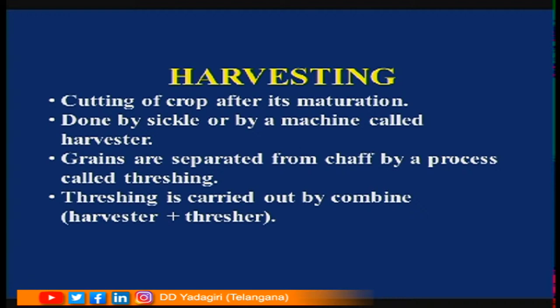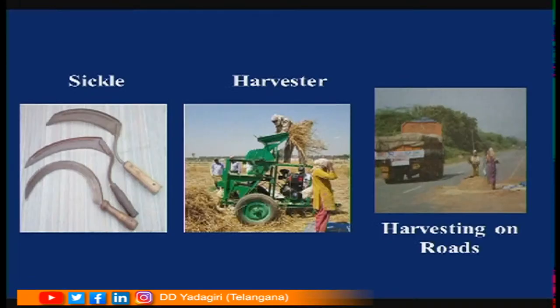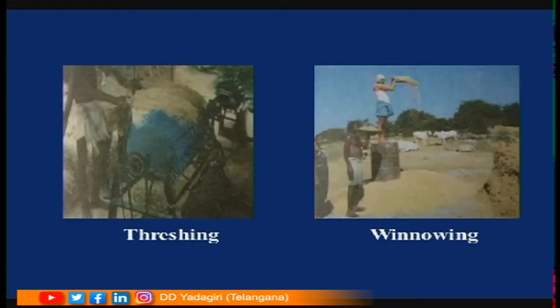After harvesting, grains are separated from the chaff — this process is called threshing. Threshing is done by a machine called a combine, which is both a harvester and a thresher. After threshing comes winnowing — separating lighter and heavier grains to collect good grain. Note: harvesting on roads is dangerous as accidents may occur and should be avoided.